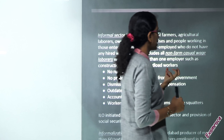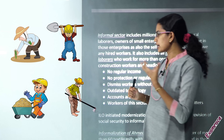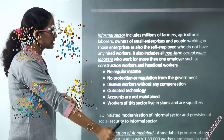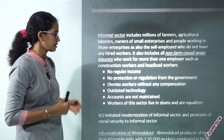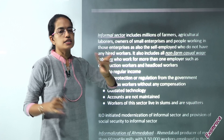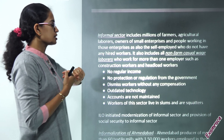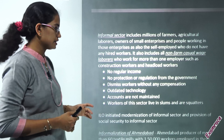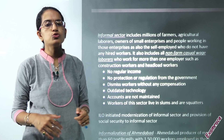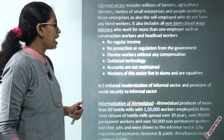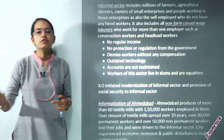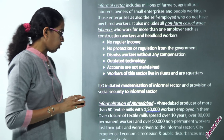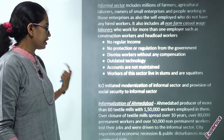The informal sector includes smaller enterprises, farmers, agriculture, household enterprises and non-farm casual activities. This sector does not provide regular income, protection or regulation. Workers can be dismissed without compensation, technology used is outdated, accounts are not properly maintained, and many workers live in slums. That is the scenario of informal sector employment in India and abroad.